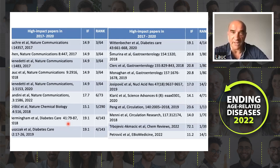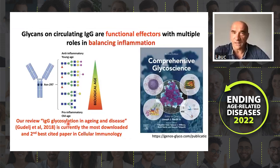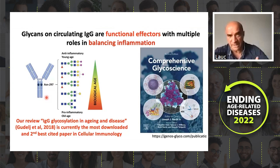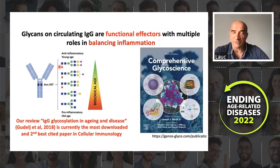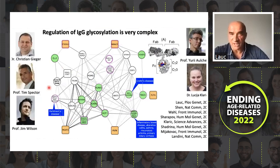One of the proteins we focus on is immunoglobulin G, because for IgG we know that glycans attached to the Fc region of the protein are regulating effector functions. Depending on the glycan structure attached, immunoglobulin will activate different branches of the immune system, and even act anti-inflammatorily in some cases. We know these glycans also change with age — when we are younger, we have anti-inflammatory glycans, and as we get older, we get truncated pro-inflammatory glycans. This is regulated by a network of at least 40 genes, mapped through a series of GWAS papers over the last decade.